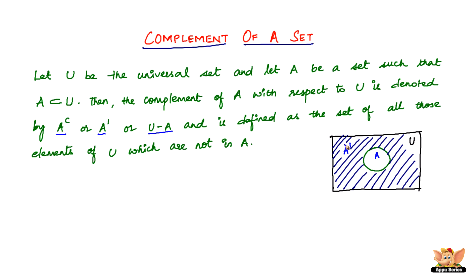It is very important to know the complement of a set with respect to what. In this case, it is the complement of set A with respect to U, and it is defined as the set of all elements of U which are not in A. In the Venn diagram, the blue shaded region — that is, the box excluding the circle — represents the complement of set A. The circle in the middle represents set A, and the whole thing including set A is the universal set.